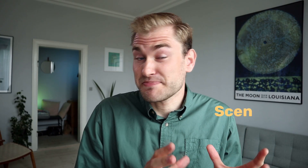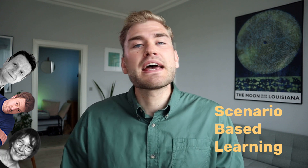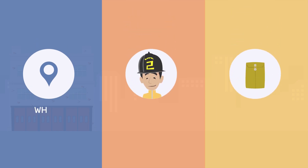So now that we know a bit about what SBL is and where it comes from, let's take a look at an example of what this could look like. To build a scenario we need to provide some information on where it takes place, who is there, and what's happening.